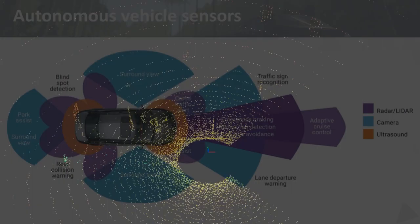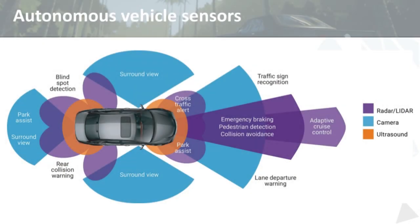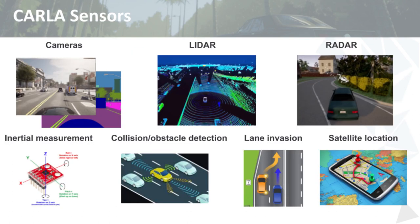Modern autonomous vehicles use an array of different types of sensors in order to interpret their environment and make decisions about next actions — for example, to accelerate or brake, to avoid another vehicle, or to change lane or turn. CARLA models a number of different sensor types used in modern autonomous vehicles to facilitate the production of training data and testing for a multimodal approach to environment perception.